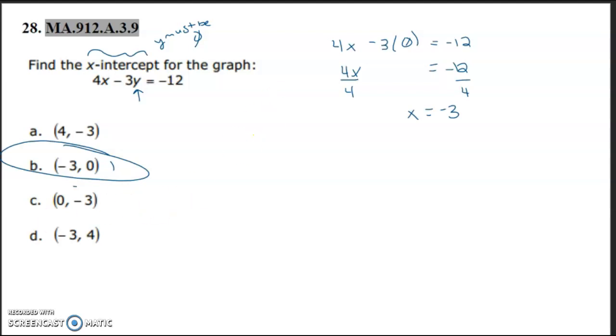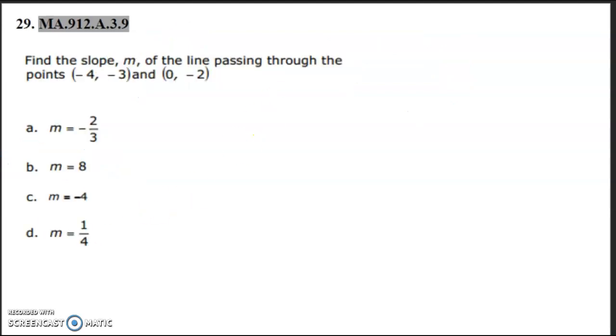All right, so number 29, find the slope m of the line passing through two points. When you have something like this, it's pretty simple. We need a formula. So there is a slope formula. We have m equals y2 minus y1 over x2 minus x1.